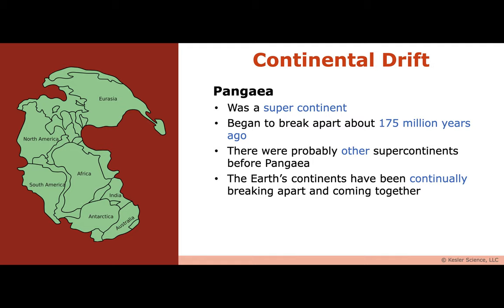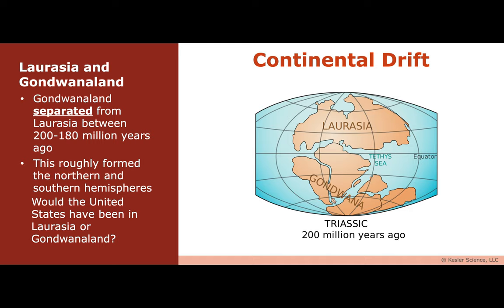Let's talk about Pangaea. It was a supercontinent — it began to break apart about 175 million years ago. And there were probably other supercontinents before that one. If you look it up, there are literally maps and evidence that break down what each continent looked like before Pangaea. This is just the most recent one. They've been continually breaking apart and coming together. If you're interested in what those earlier supercontinents may have looked like, have a look — it's kind of cool.